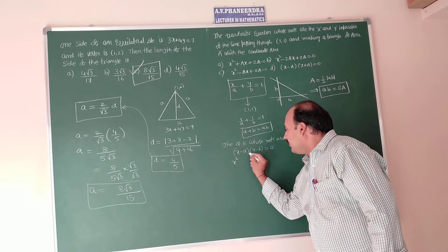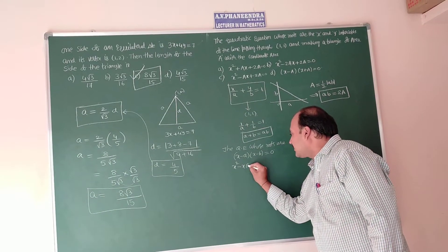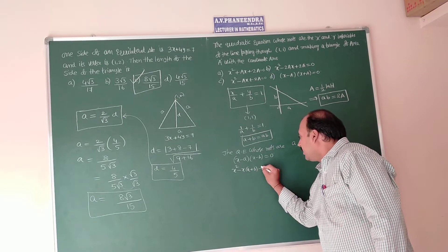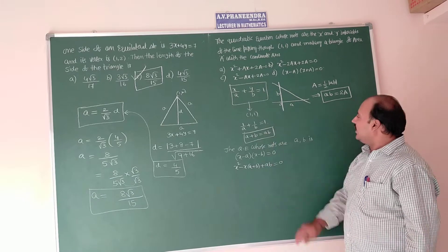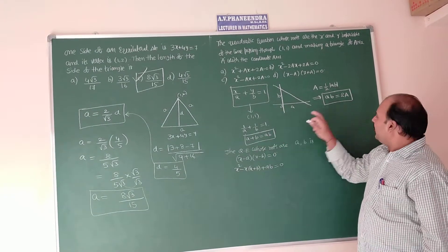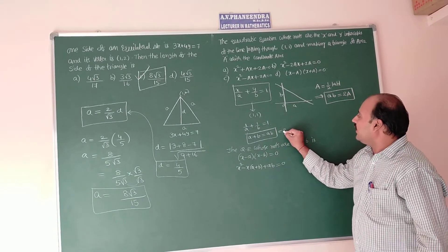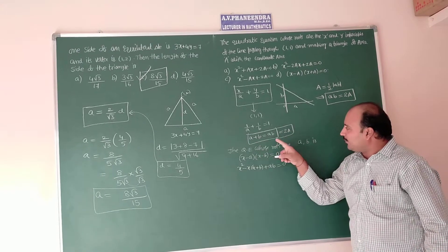This can be written as x square minus x into A plus B plus AB is equal to 0. What is A plus B? AB is also equal to 2A, we can write as 2A.